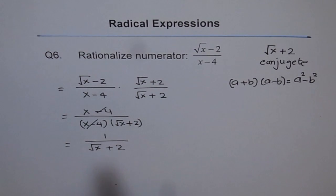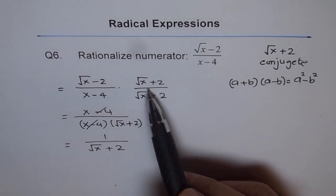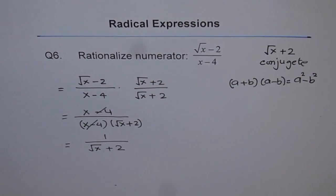So this is a simplified rational expression where we have rationalized the numerator. We don't have the radical in the numerator, however it comes in the denominator. But that is what happens when we rationalize the numerator and this is the process of doing it. Thank you.